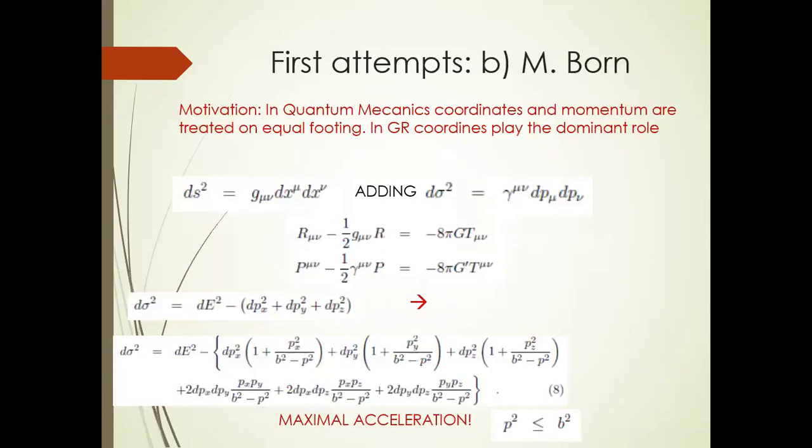One of the first, or the first attempts to my knowledge, is proposed by Max Born. His motivation was that he didn't like the asymmetry of coordinates and momenta in general relativity. While in quantum mechanics, you have the symmetry. You can interchange coordinates with momenta, you can apply canonical transformations. So everything is fine. In general relativity, the main quantity is the length element, only depending on the coordinates. And he added at a high energy limit, what he calls high energy limit, a momentum part, which has a similar structure and he could derive equations of motions for the low and high energy limit.